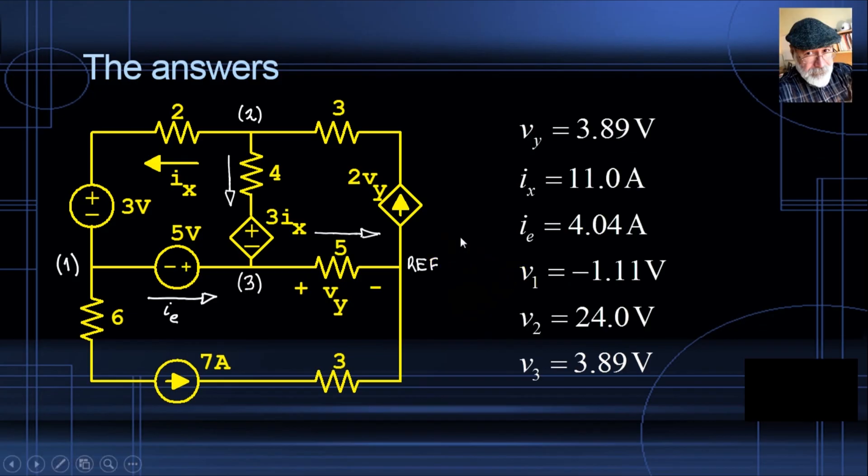So let's see what we have here. The value of the controlling variable Vy is 3.9 volts, this one, and this controlling current Ix is 11 amps. Fine. And the evil current down here, 4 amps. And V1, this node is actually below the reference node chosen, one volt below. Well, V2, this one is really high above the reference, 24 volts, and V3 is only 3.9 volts above the reference. So you see, that is how we solve the circuit using MNA Take 1.